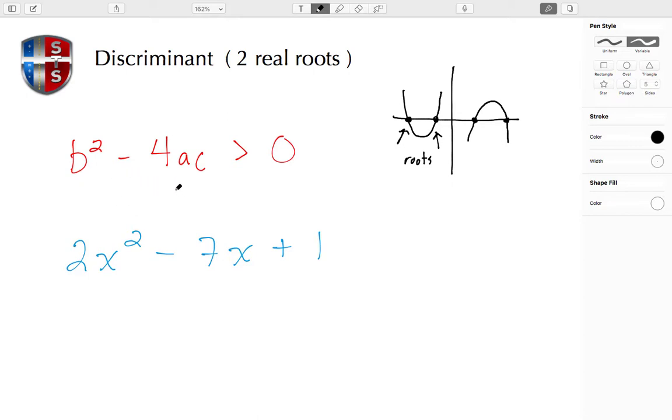If that expression is greater than zero, then we have this situation of two real roots. Let's go ahead and first show what a, b, and c are. Here we have a, which is the number 2.